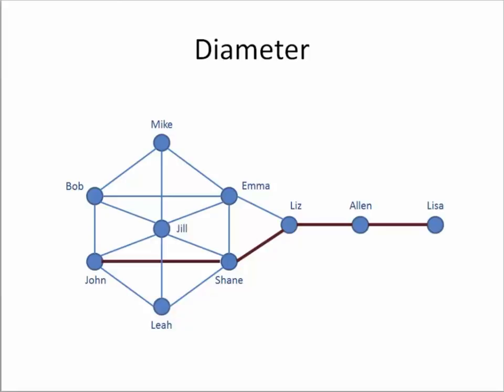Diameter is a measure which determines the longest distance between any pair of two nodes in the network. In this case, we can see that the network diameter is four, because Lisa and John need to go via four individual relations so that they can exchange any information.